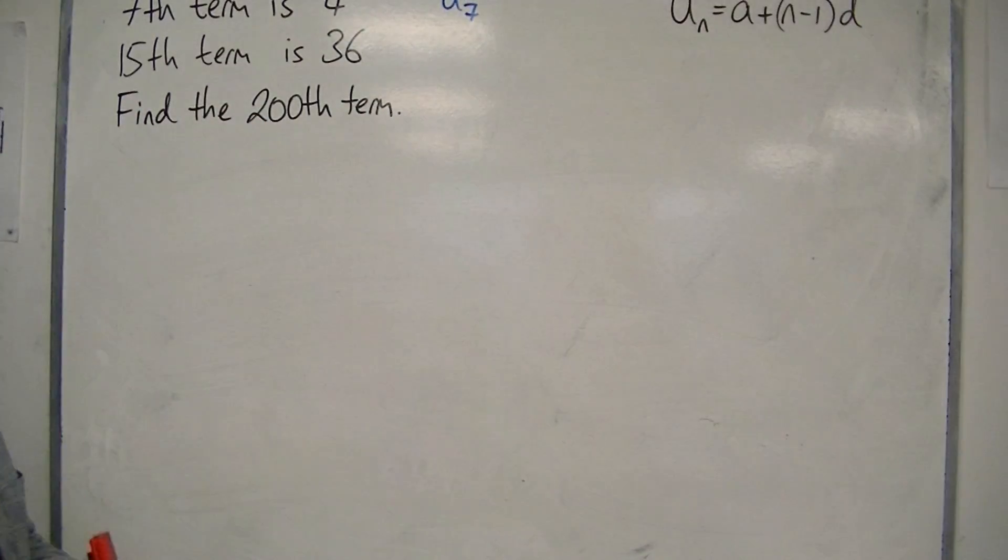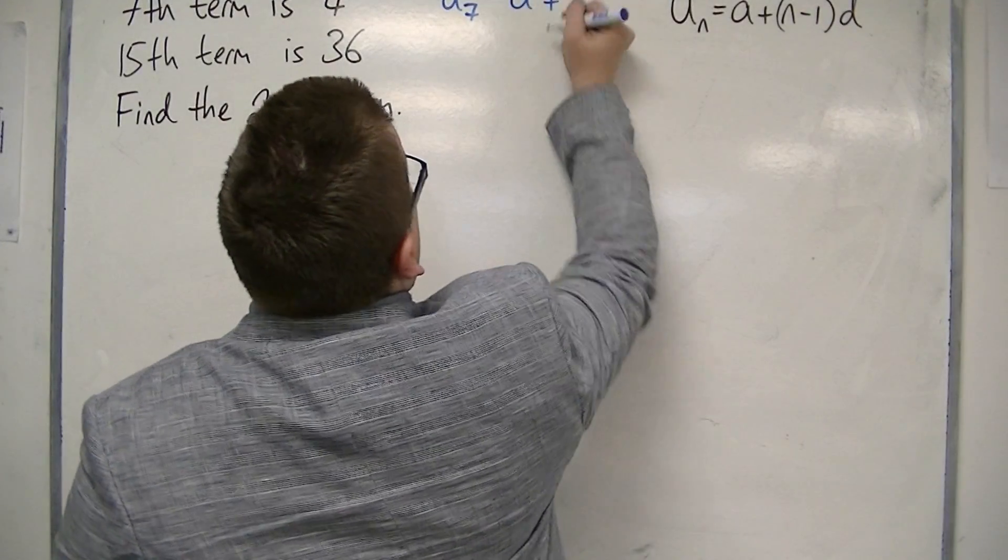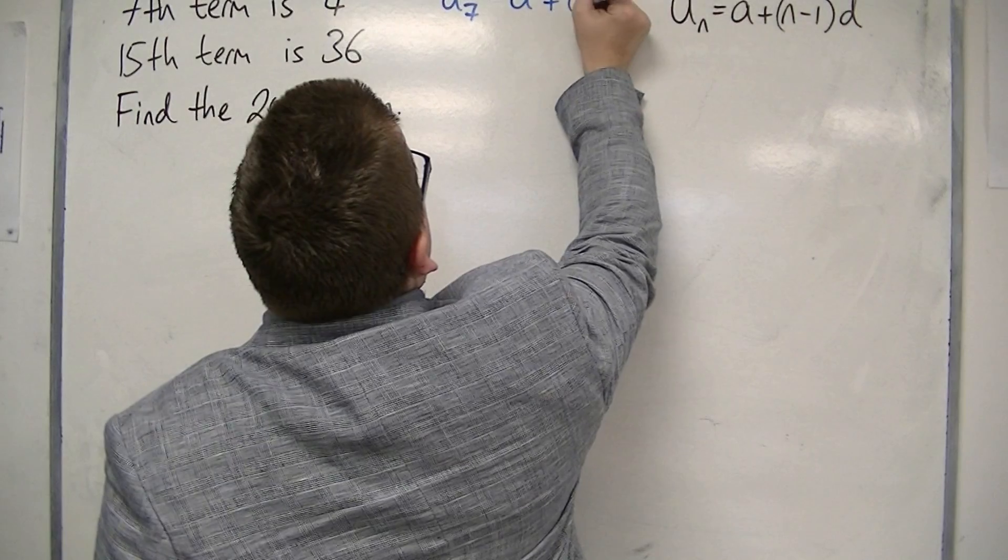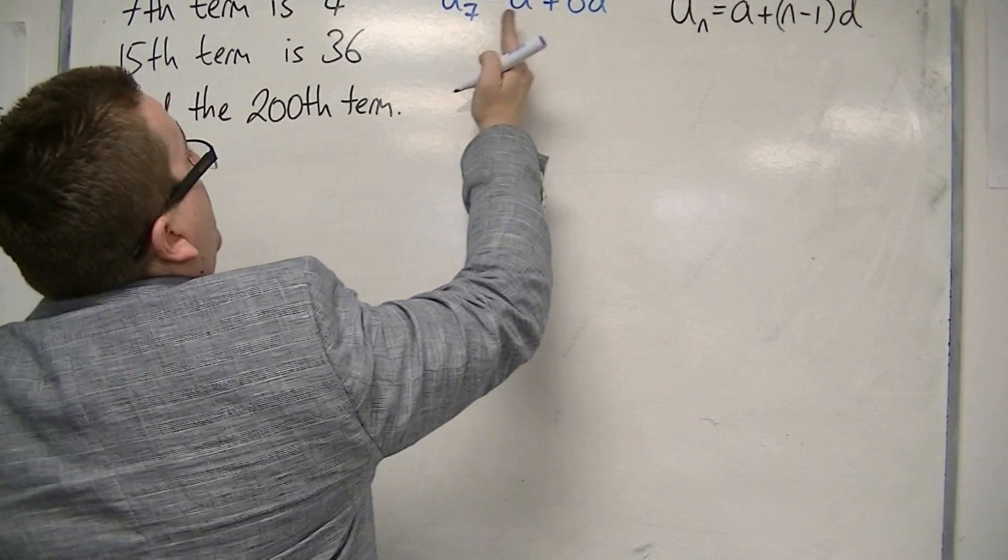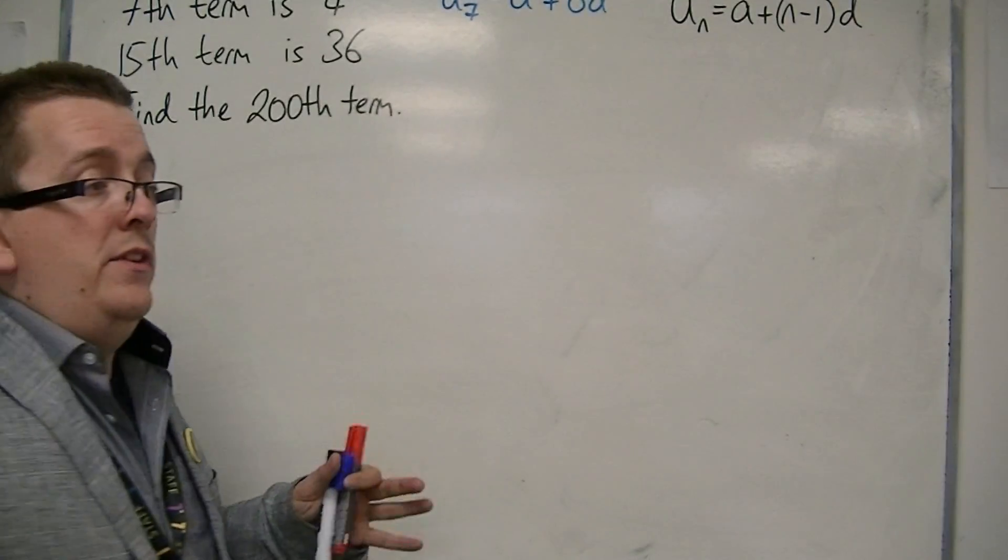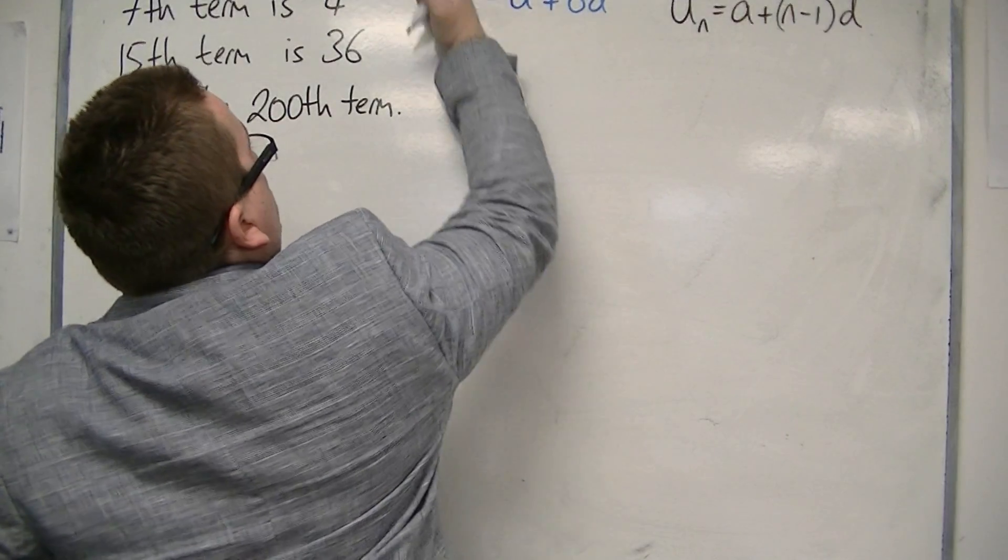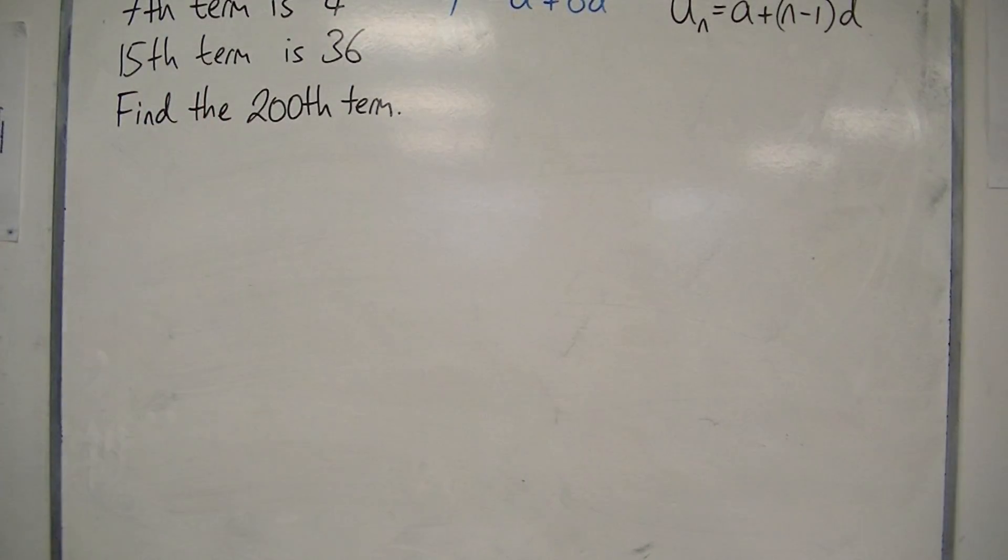Now, the 7th term can be represented with U7. So N is 7. We have the A plus N minus 1, while 7 minus 1 is 6, so we can write this as U7 is A plus 6D. But I know that U7, the 7th term, is 4. So I can rewrite that as 4 equals A plus 6D.